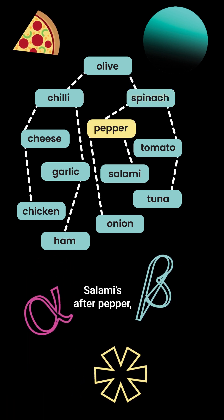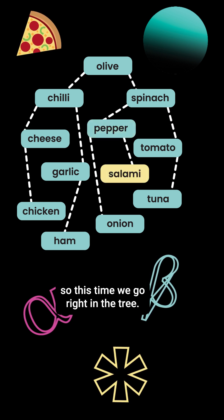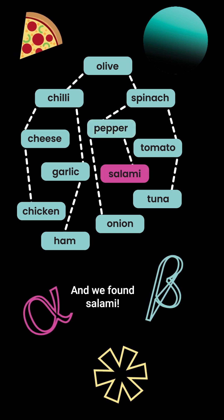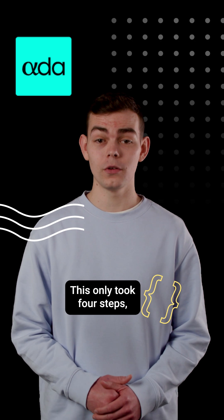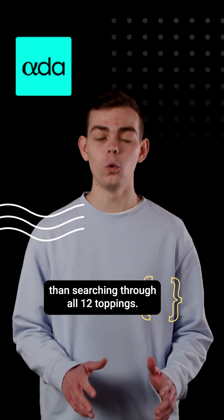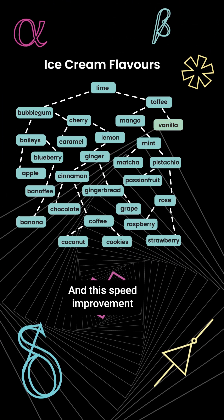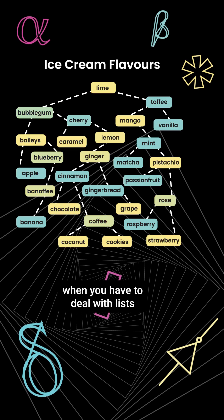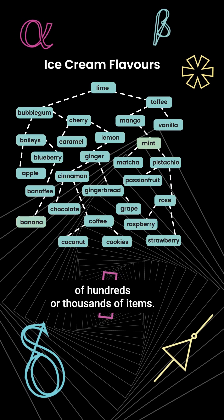Salami is after pepper, so this time we go right in the tree, and we've found salami. This only took four steps, which is much quicker than searching through all 12 toppings. And this speed improvement gets so much bigger when you have to deal with lists of hundreds or thousands of items.